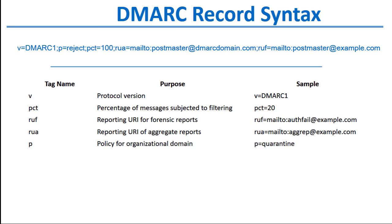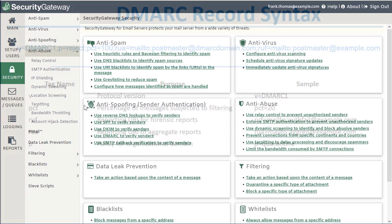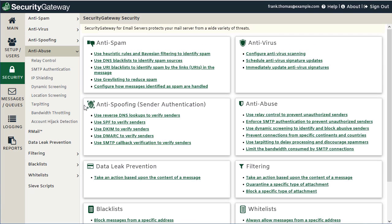When considering your DMARC deployment strategy, it is important to specify where you want those reports to be sent using the RUA and RUF tags, and what percentage of messages for your domain are treated according to your DMARC record via the P equals tag. This will allow you to monitor how your domain is being used so that you can make adjustments accordingly. Now let's go over the DMARC features found in Security Gateway.